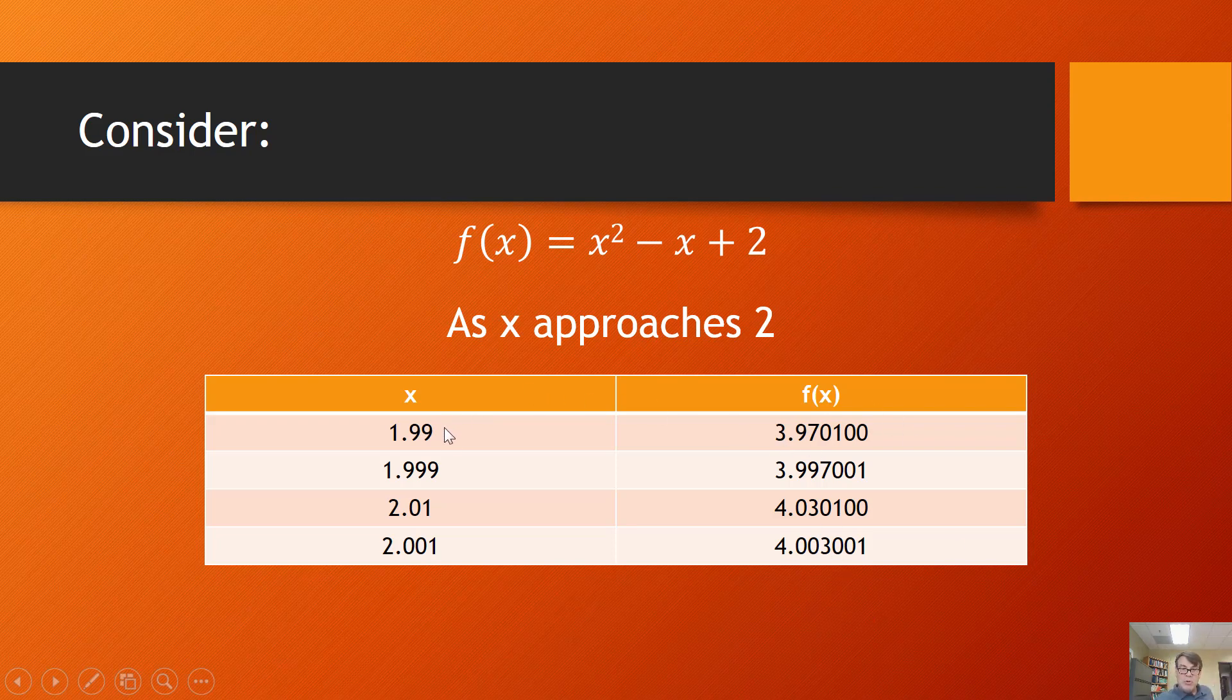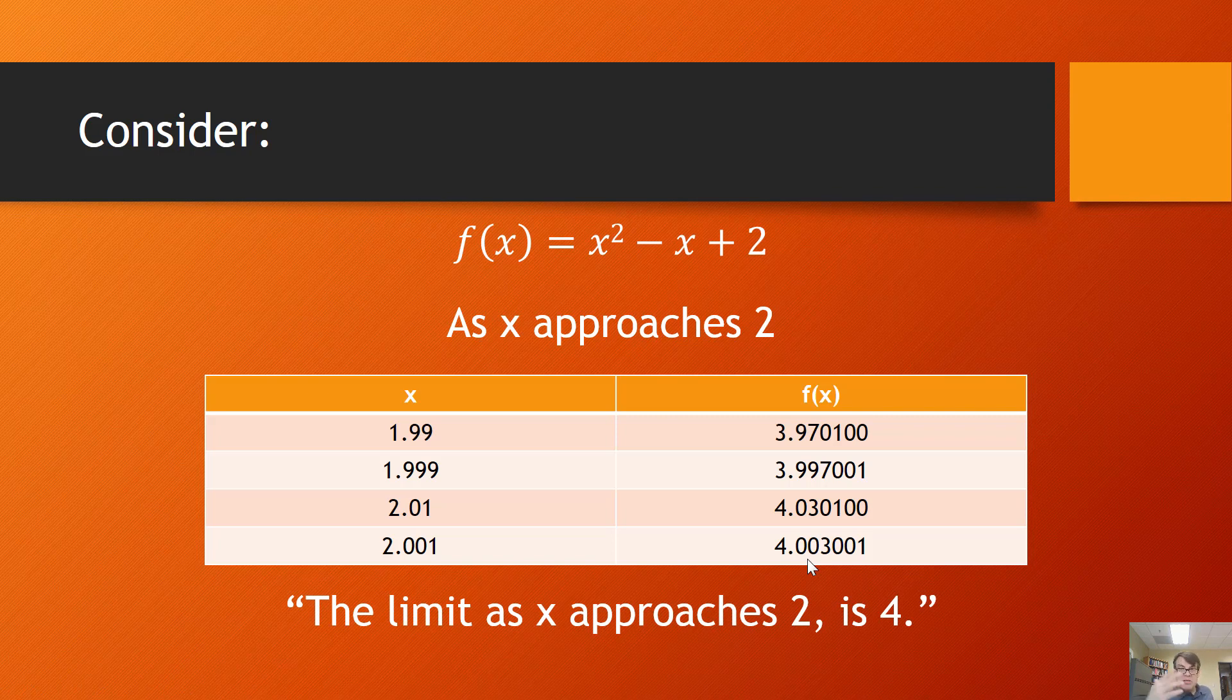As we approach 2 from the left, it gets closer and closer to 4. As we approach 2 from the right, it gets closer and closer to 4. So we say that the limit as x approaches 2 is 4. This is a pretty boring example because just plugging in the 2 gives us 4. Of course it's often much more complicated than that, but this gives us a basis for introducing limit language.